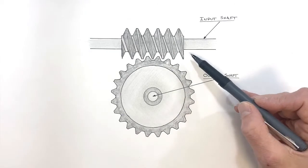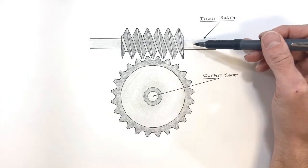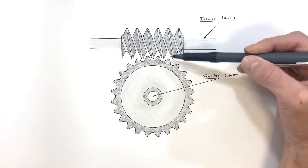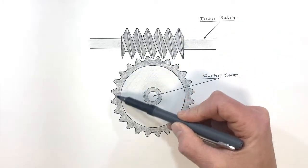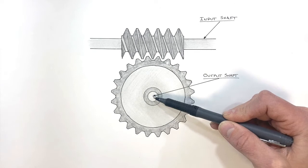When dealing with a worm gear assembly, all we have is a gear connected to an input shaft. This gear is really nothing other than a screw. As this screw rotates, it turns a gear with which it has been meshed, which is connected to an output shaft.